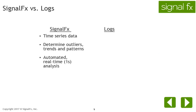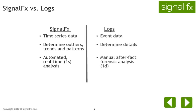SignalFX metrics are in the form of time series data and used to determine outliers, trends, and patterns. The metrics are automated and can be analyzed in real-time at resolutions as fine as one second. Logs are based on event data and are used to determine details; they are manual and very useful for forensic analysis. SignalFX complements logs and APM solutions.